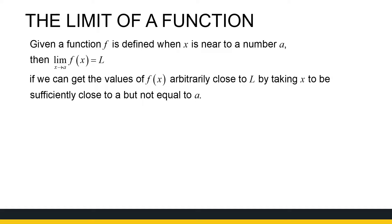So, given a function f is defined where x is near to a number a, in this case it was the number 1, we write it, the limit as x approaches a of f of x is equal to l. So, in the case we had now, let's just rewrite that. We had the limit as x approaches 1 of this function was the value 0.5. So the limit is equal to 0.5.